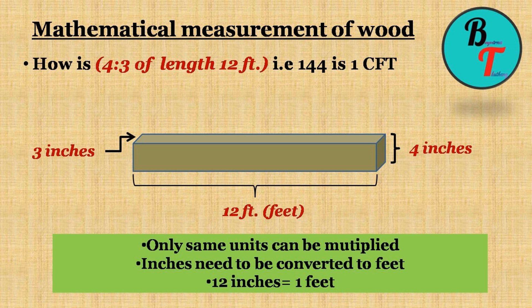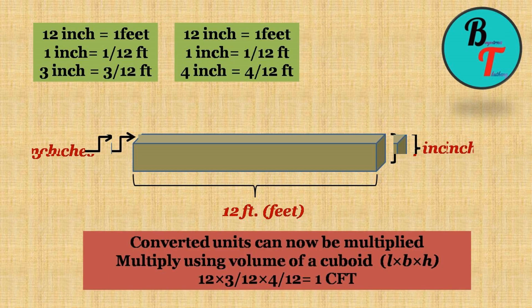One must keep in mind that only same units can be multiplied, added, or divided in mathematics, which means the inches need to be converted into feet where 12 inches equal 1 foot. If 12 inches equal 1 foot, 1 inch equals 1 by 12 feet. 3 inches equal 3 by 12 feet, similarly 4 inches equal 4 by 12 feet.